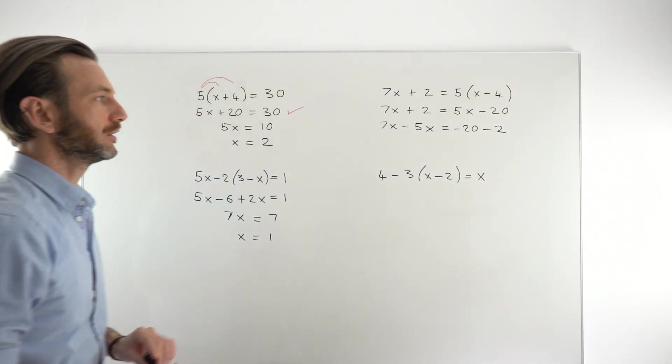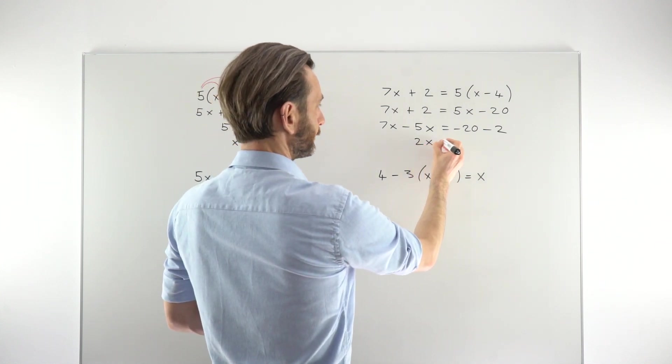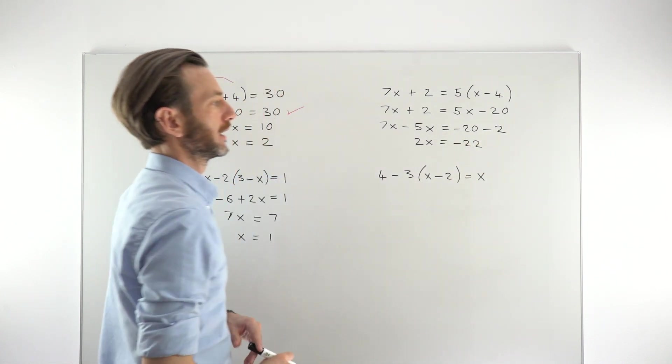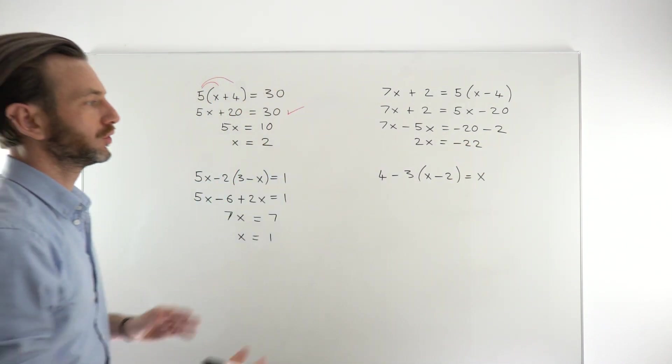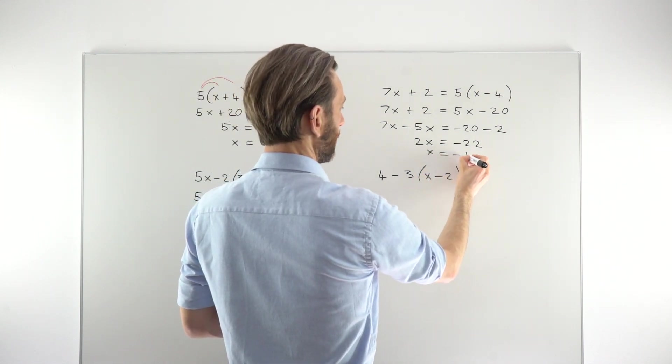So it's going to be like this guy here. And then 7x minus 5x gives us 2x minus 20 minus another 2. So we're going further into the negatives is minus 22. Dividing both sides by 2 and then we get x equals negative 11.